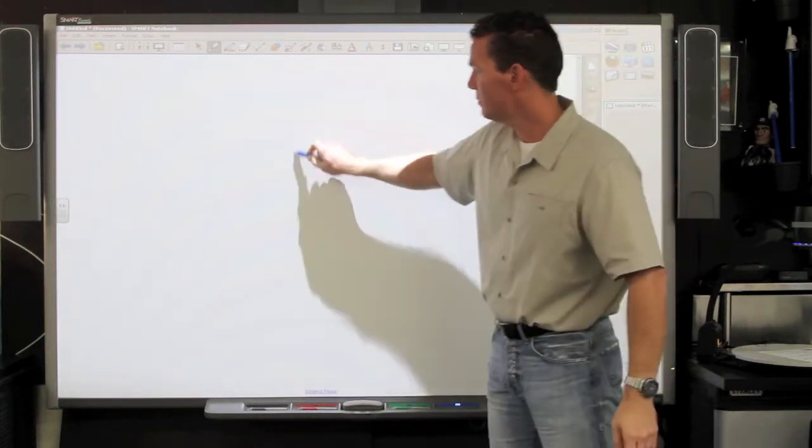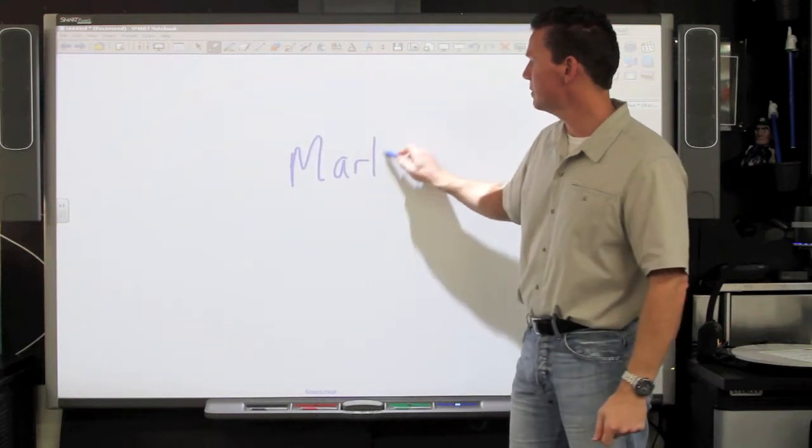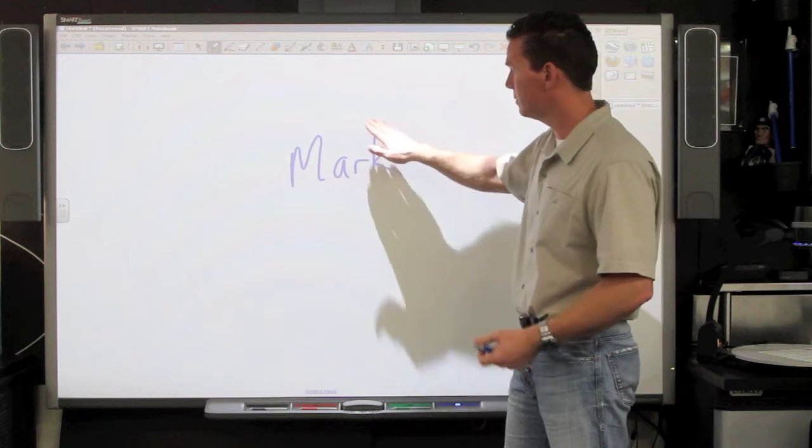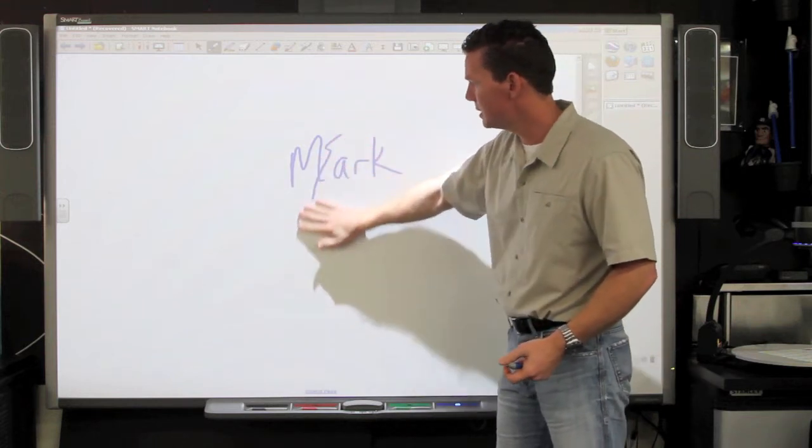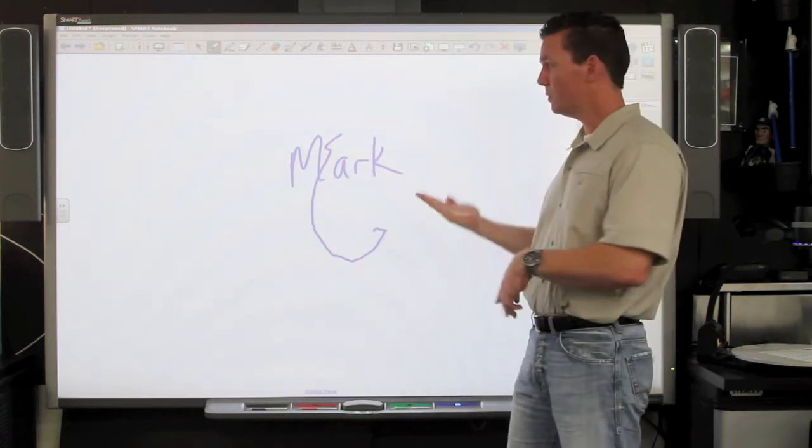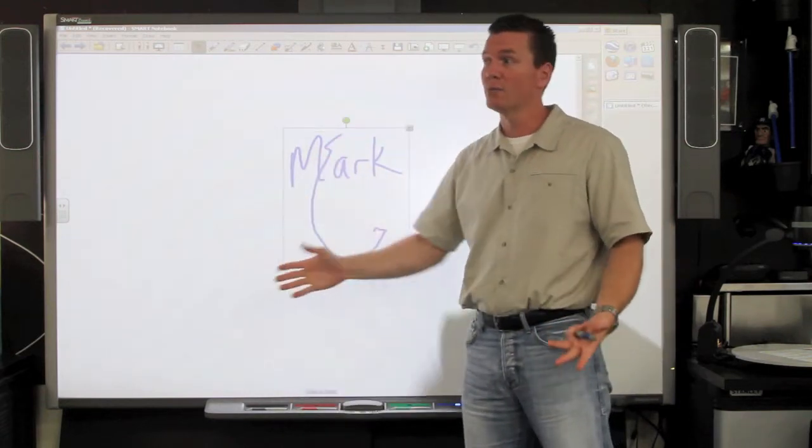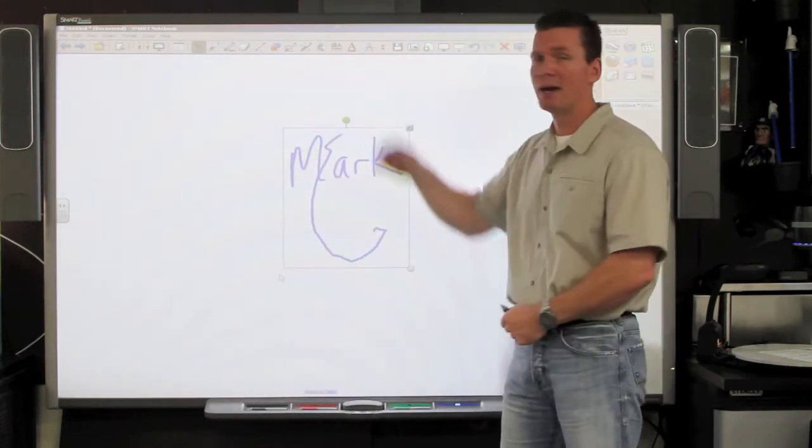But the confusion comes when people understand that you can erase with your hand but they have this happen to them. Have you ever had this happen to you? You go to erase and suddenly you've got a pen, or you go to erase and you've got the selection tool. You get frustrated, you give up and you go back to using buttons.